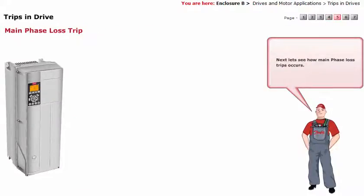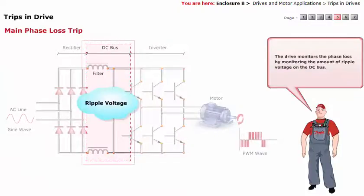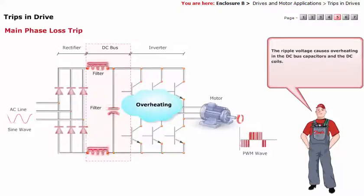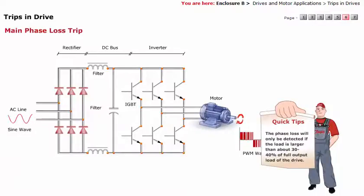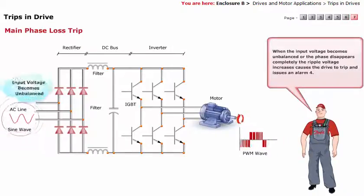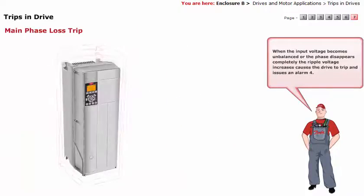Next, let's see how main phase loss trips occur. The drive monitors the phase loss by monitoring the amount of ripple voltage on the DC bus. Ripple voltage on the DC bus is the product of phase loss. The ripple voltage causes overheating in the DC bus capacitors and the DC coils. If left unchecked, the lifetime of the capacitors would be drastically reduced. Phase loss will only be detected if the load is larger than about 30 to 40% of full output load of the drive. When the input voltage becomes unbalanced or the phase disappears completely, the ripple voltage increases, causing the drive to trip and issuing alarm 4.